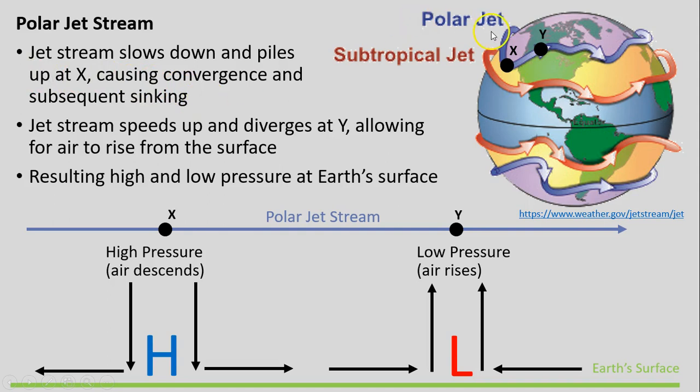As it creates these waves and undulations and moves about, we can think of it like a racetrack, this very high-speed river of air, or like a river itself. We go around a bend, and at point X, the air has to slow down as it goes around that corner, just like driving your car—you usually can't go as fast around a corner as you can on a straightaway. That air, because it's slowing down, piles up on each other.